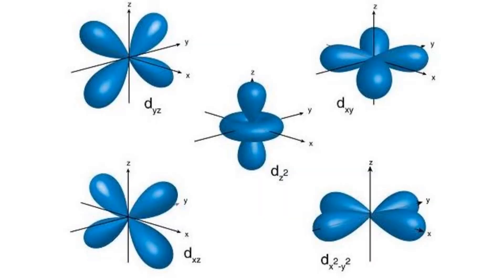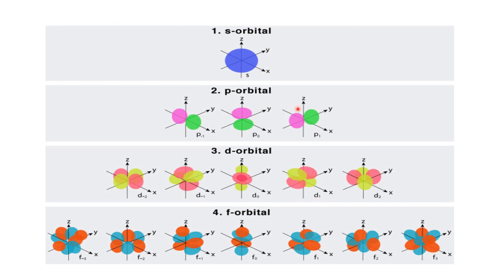The 5 d orbitals are: dyz, and dx²−y² lies along the x and y axes. Here is another diagram for better understanding. You can see the s orbital is spherical, centered among all three axes. The p orbitals have their own respective axes with different orientations. The d and f orbitals are of complicated shapes. This was all about the shapes of orbitals — thank you so much.